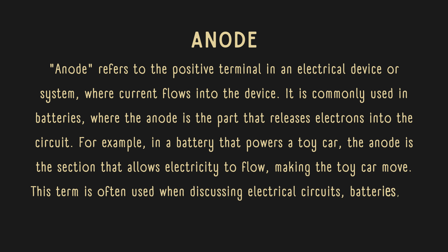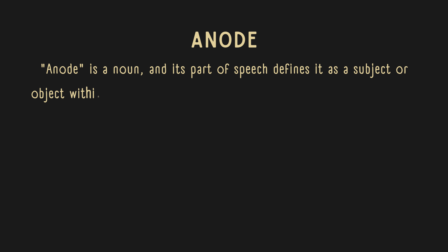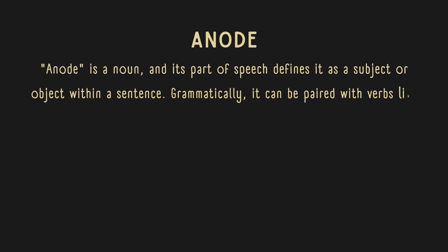Anode is a noun, and its part of speech defines it as a subject or object within a sentence. Grammatically, it can be paired with verbs like "is" or "provides" to describe its role in a circuit.